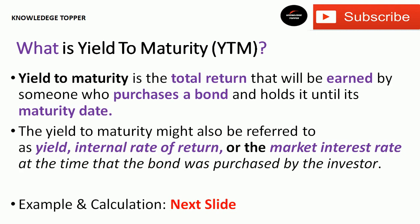Hi everyone, this is Knowledge Topper. In this video we are discussing yield to maturity. We are covering features of a bond, or features of fixed income securities. We already covered three important ones: par value (also called nominal value or face value), maturity date, coupon rate, and coupon payments. Today we will look at YTM — yield to maturity — and I will explain how to calculate it with the help of an example.